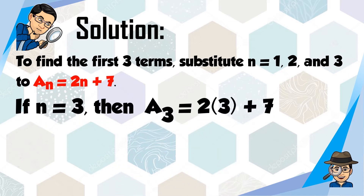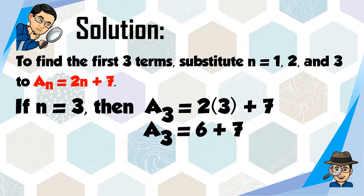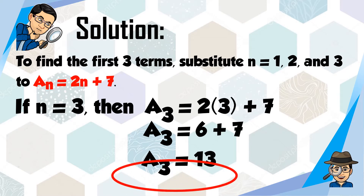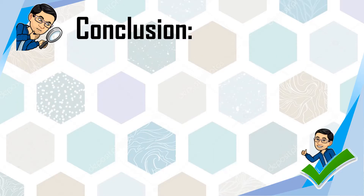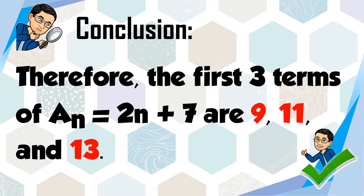Last one: if n is equal to 3, then a sub 3 is equal to 2 times 3 plus 7. What is 2 times 3? That is 6, and 6 plus 7 is 13. So 13 is the third term. Therefore, the first 3 terms of a sub n equals 2n plus 7 are 9, 11, and 13. The pattern is we are adding 2 each time.